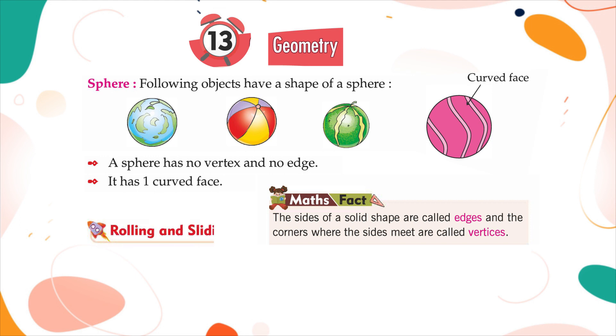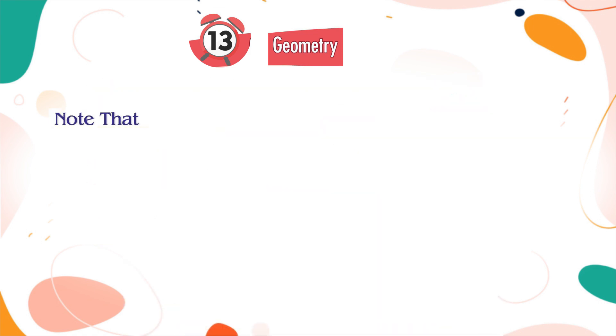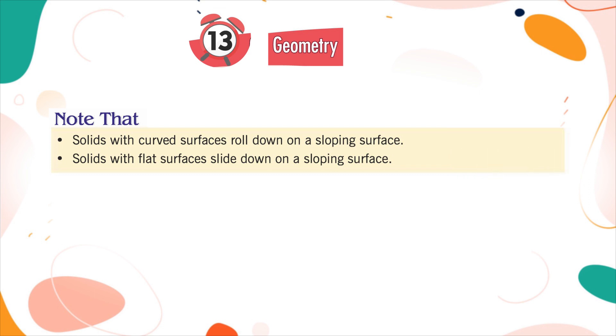Tire is rolling. Sledge is sliding. Note that solids with curved surfaces roll down on a sloping surface. Solids with flat surfaces slide down on a sloping surface.